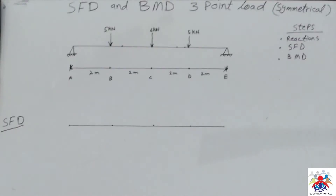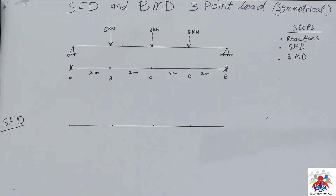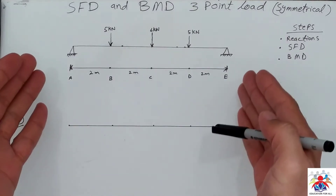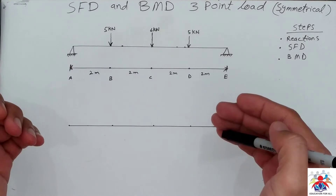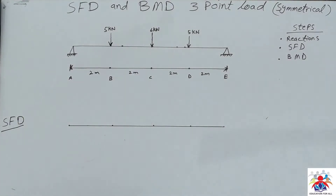Hello and welcome to my YouTube channel. In this video I am going to explain how to draw shear force and bending moment diagrams for this type of beam. As you can see in the diagram, we have three point loads acting downwards. These point loads are trying to bend our beam downwards, whereas we have two reactions to support our beam and make it parallel. We have three steps to follow: first calculate reactions, second draw the shear force diagram.